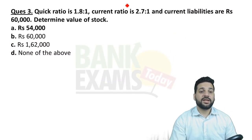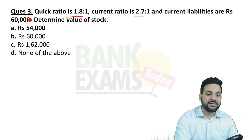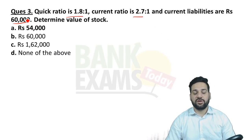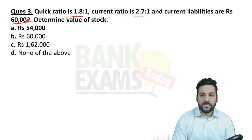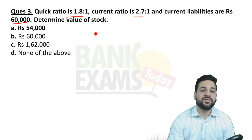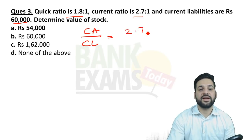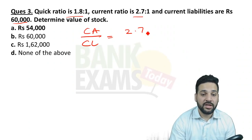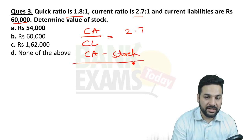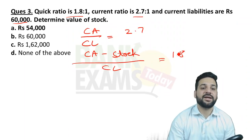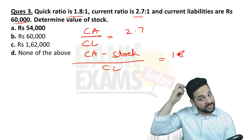Next question: the quick ratio is 1.8, the current ratio is 2.7, and current liabilities are 60,000 — determine the value of stock. Is it difficult? No. The formula is: current assets divided by current liabilities = 2.7 (current ratio), and current assets minus stock divided by current liabilities = 1.8 (quick ratio).